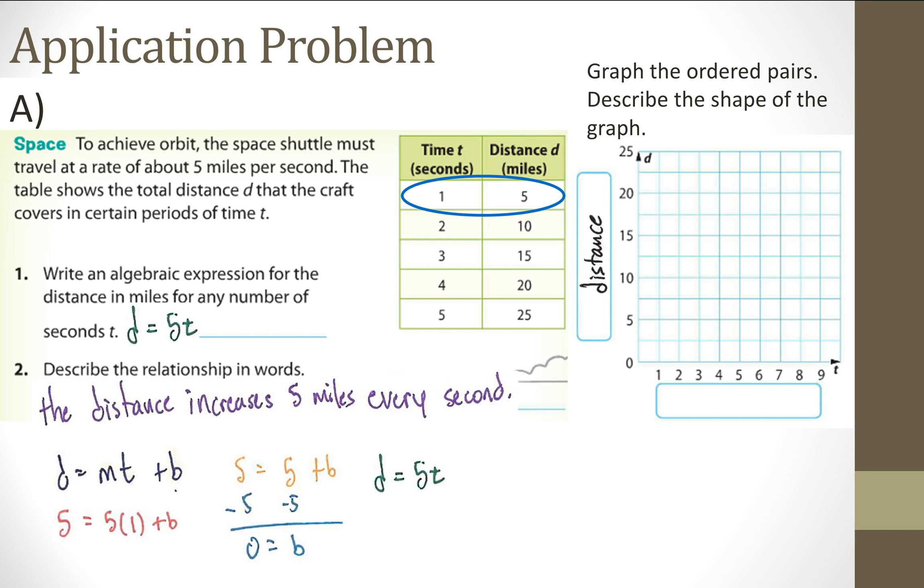And we can graph those ordered pairs. Y is going to be distance. T is going to be, or X is going to be time. And I take each of these just like I have one and five circled and that becomes an ordered pair. Two and ten, three and fifteen, four and twenty, five and twenty-five. Of course connect the dots. And I do have a graph for the distance in miles after T seconds for this space shuttle.